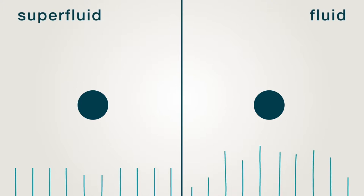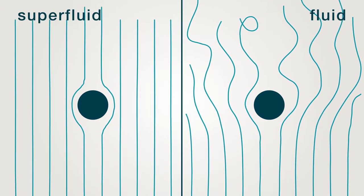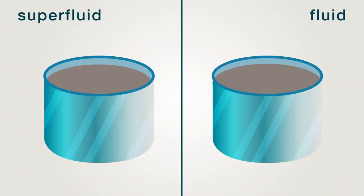Condensates often exhibit superfluidity, where they flow with no viscosity. Additionally, superfluids cannot rotate, except in the form of tiny defects called vortices.